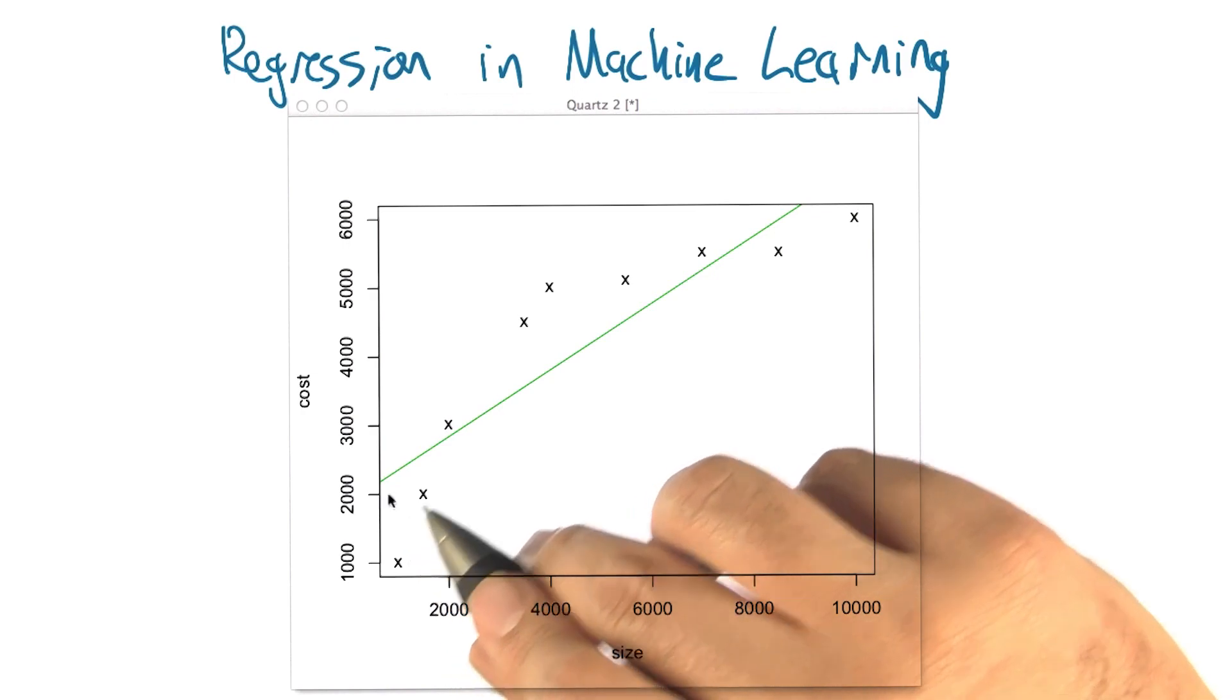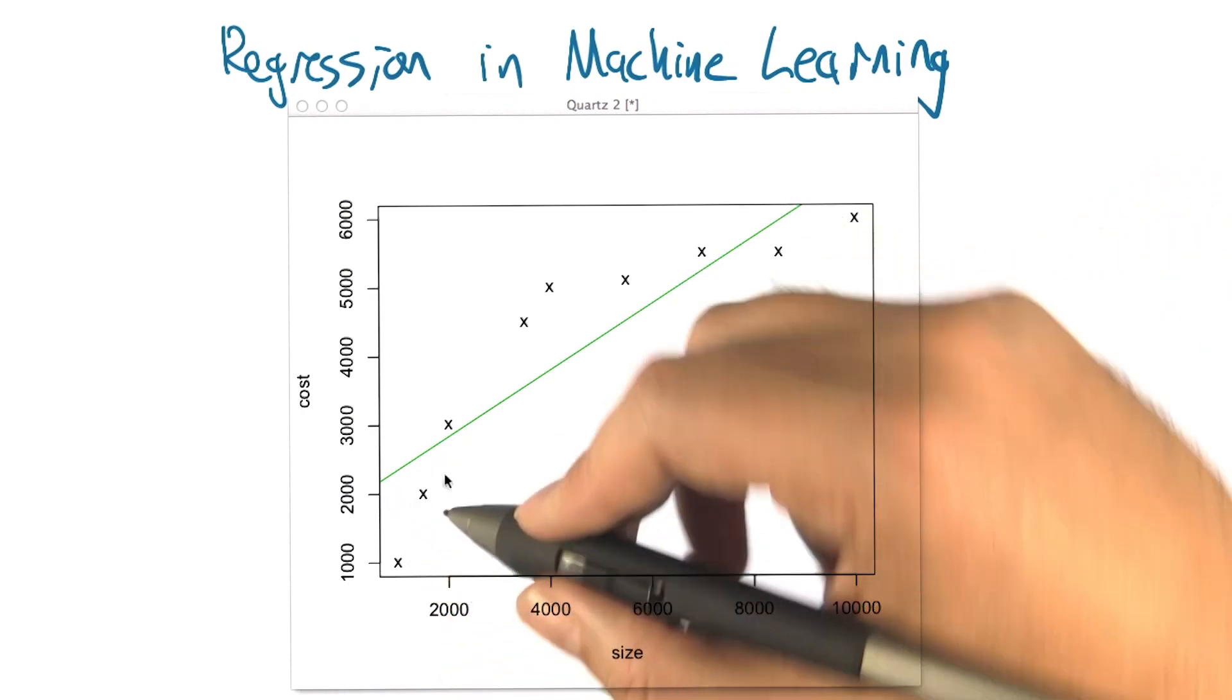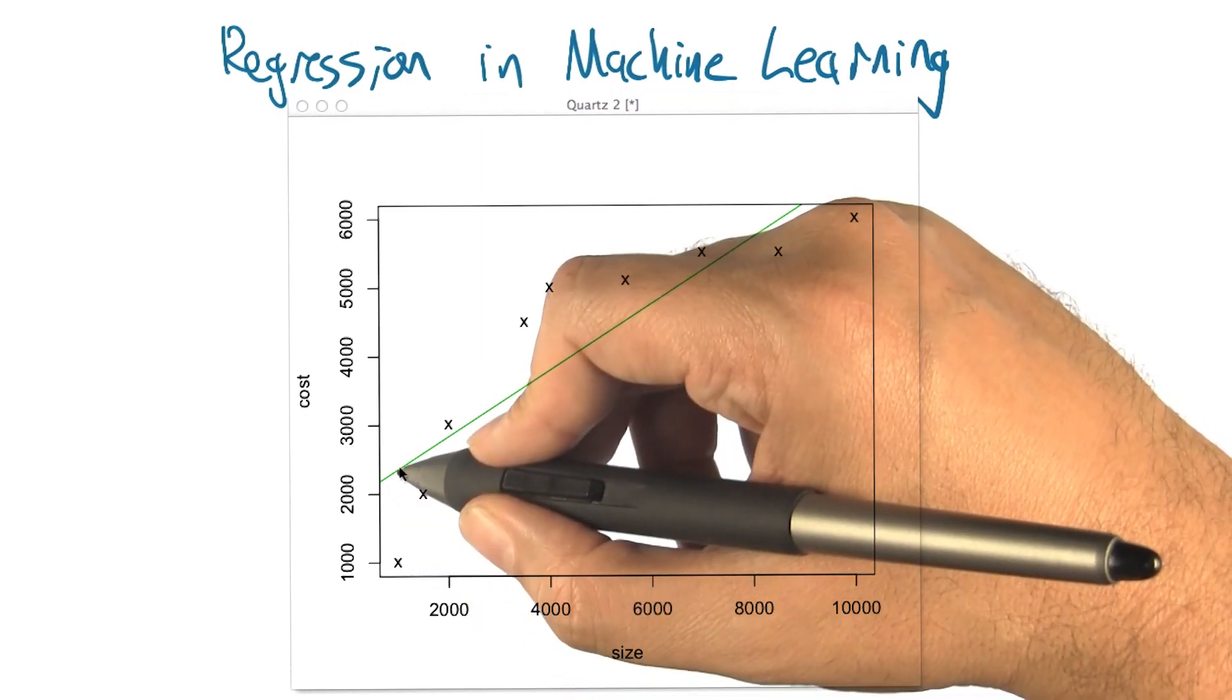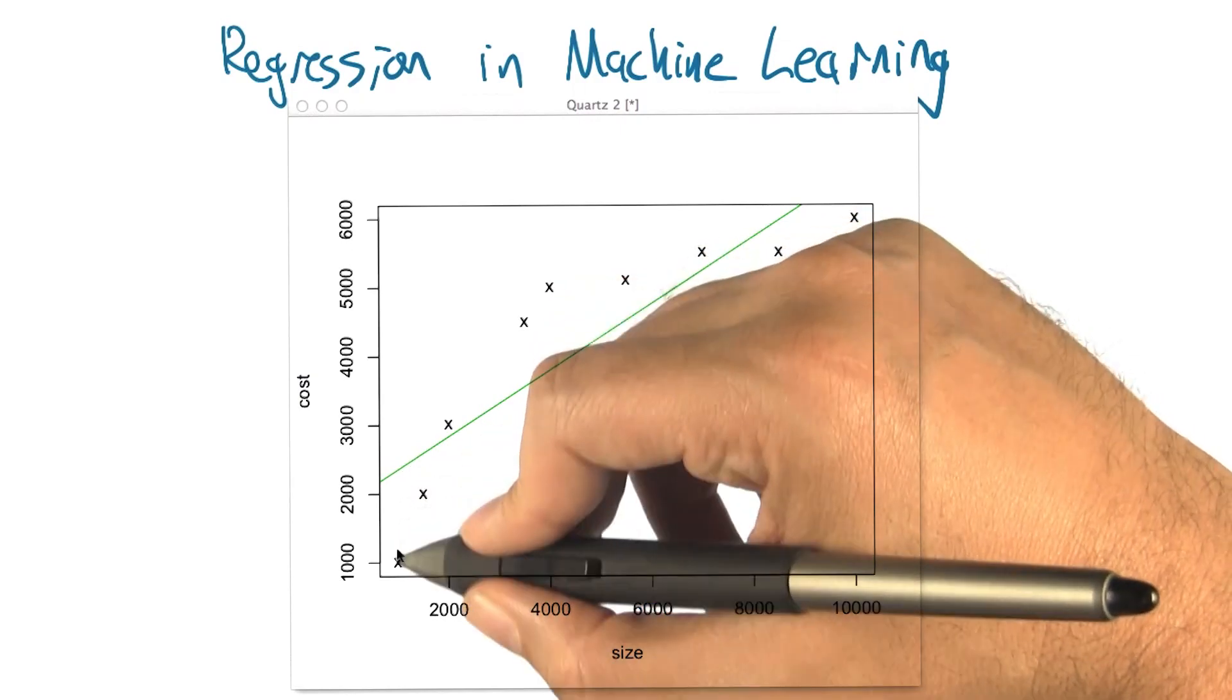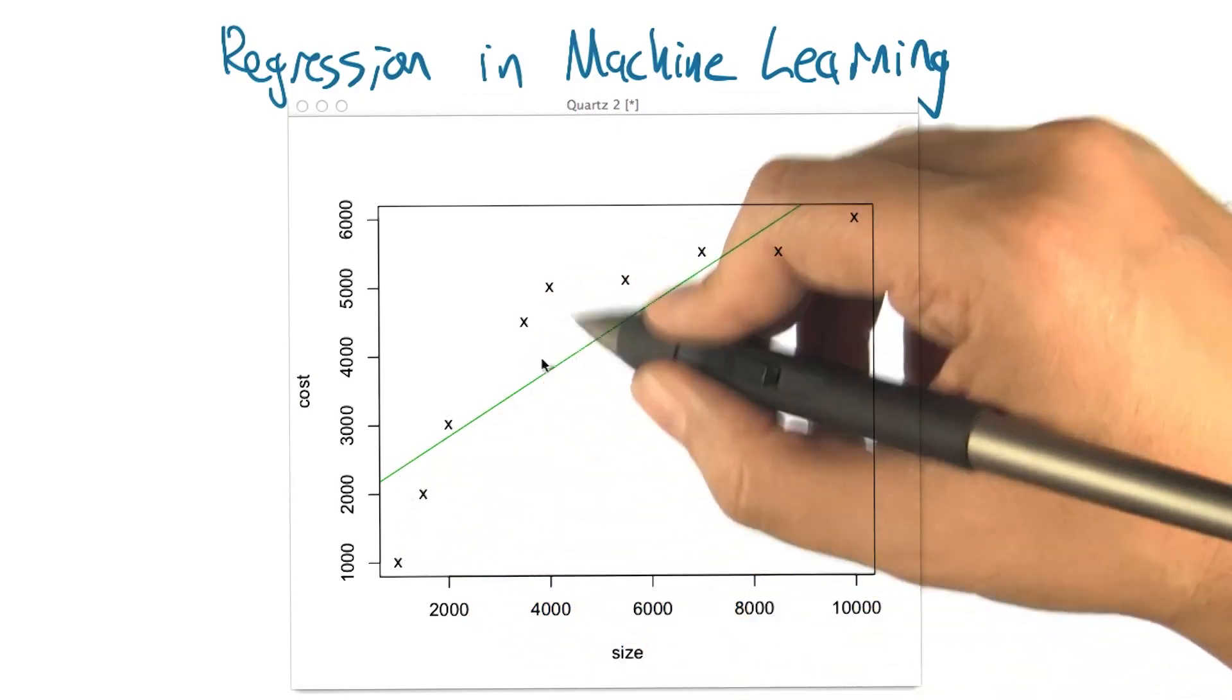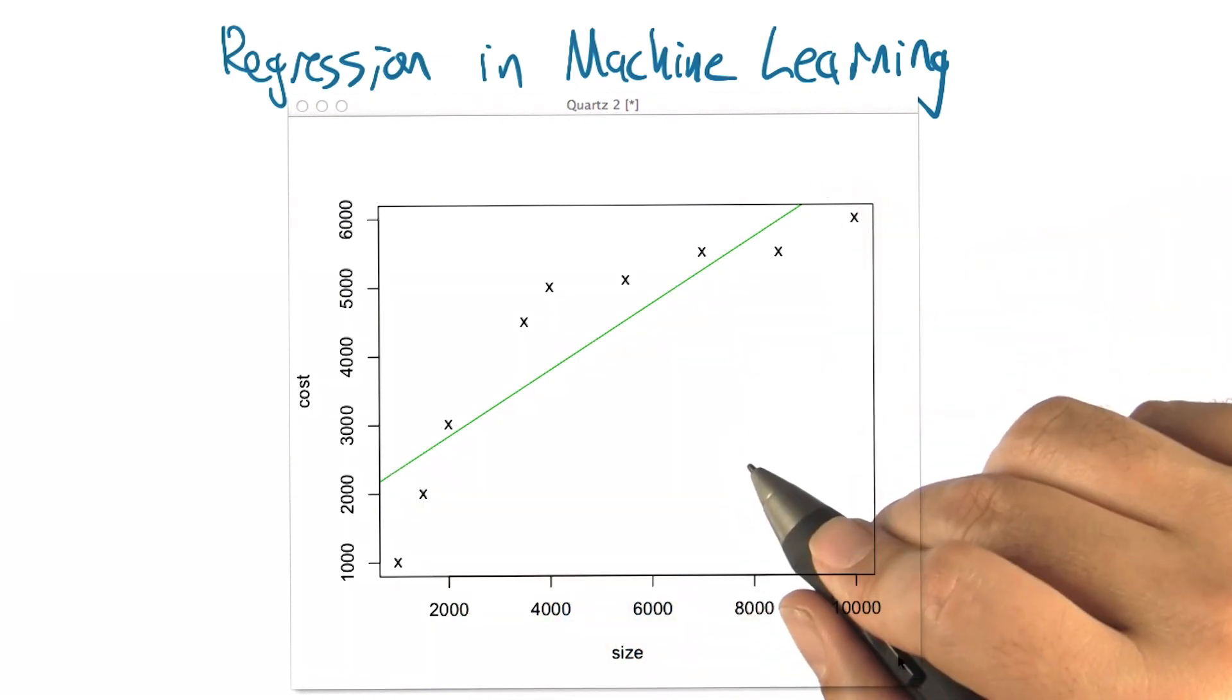So what I have here is, it turns out, of all the possible linear functions, this is the one that minimizes the squared error, the squared deviation between these x points and the corresponding position on the green line. So it finds a way of balancing all those different errors against each other. And that's the best line we've got.